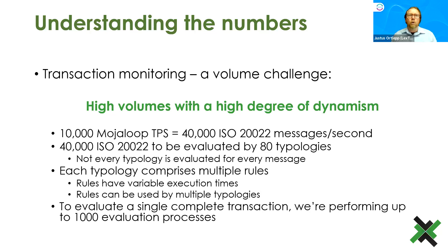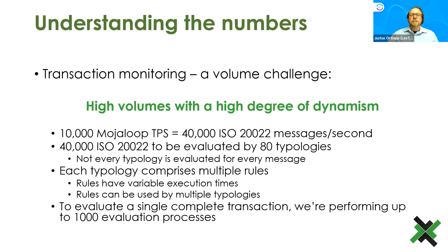One major goal — something we originally struggled with in the POC but have made significant strides on — is ensuring a rule used by multiple typologies is only executed once per transaction evaluation, so we don't waste processing time executing a rule multiple times for every typology that needs the result. To evaluate a single complete transaction, we're probably performing up to about a thousand evaluation processes, which significantly increases performance demands.